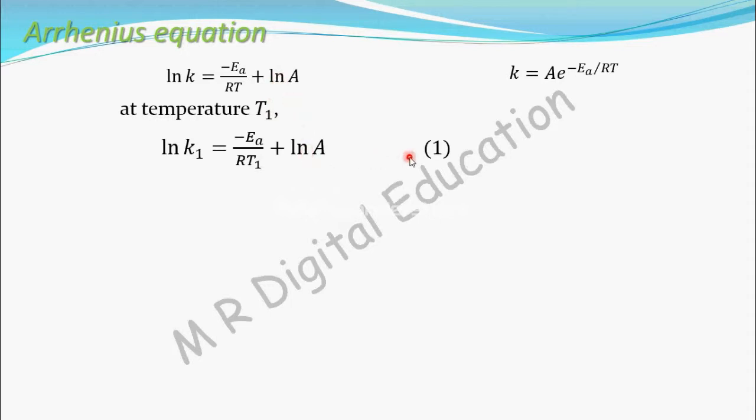At temperature T2, take a rate constant k as k2. So, ln k2 equals minus Ea by RT2 plus ln A.